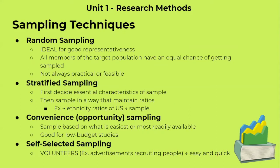Under sampling, there are four different techniques we should know. The first one is random sampling, the theoretically ideal sampling method to ensure good representativeness. All members of the target population have an equal chance of getting sampled. This would be like a lottery — everyone in the United States would be put into a lottery and names would be drawn, everyone having an equal chance. But this isn't always practical or feasible, because it is hard to get access to all the names of the people in the country, and we don't know for sure that the people sampled will actually agree to participate.